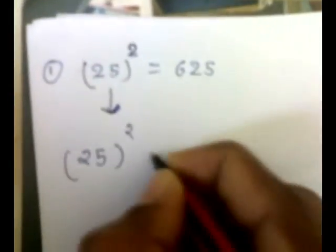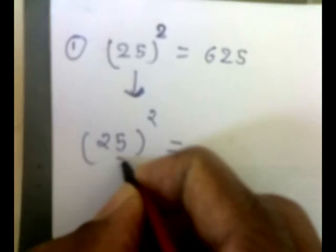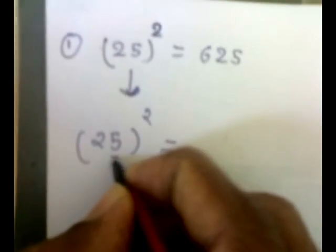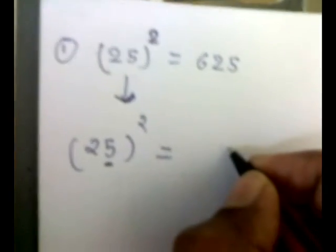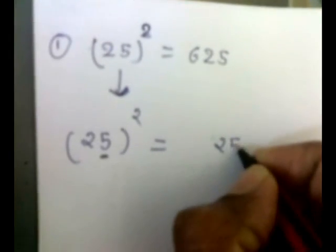25 square, how we can calculate. First, put the square of 5. That is 25.